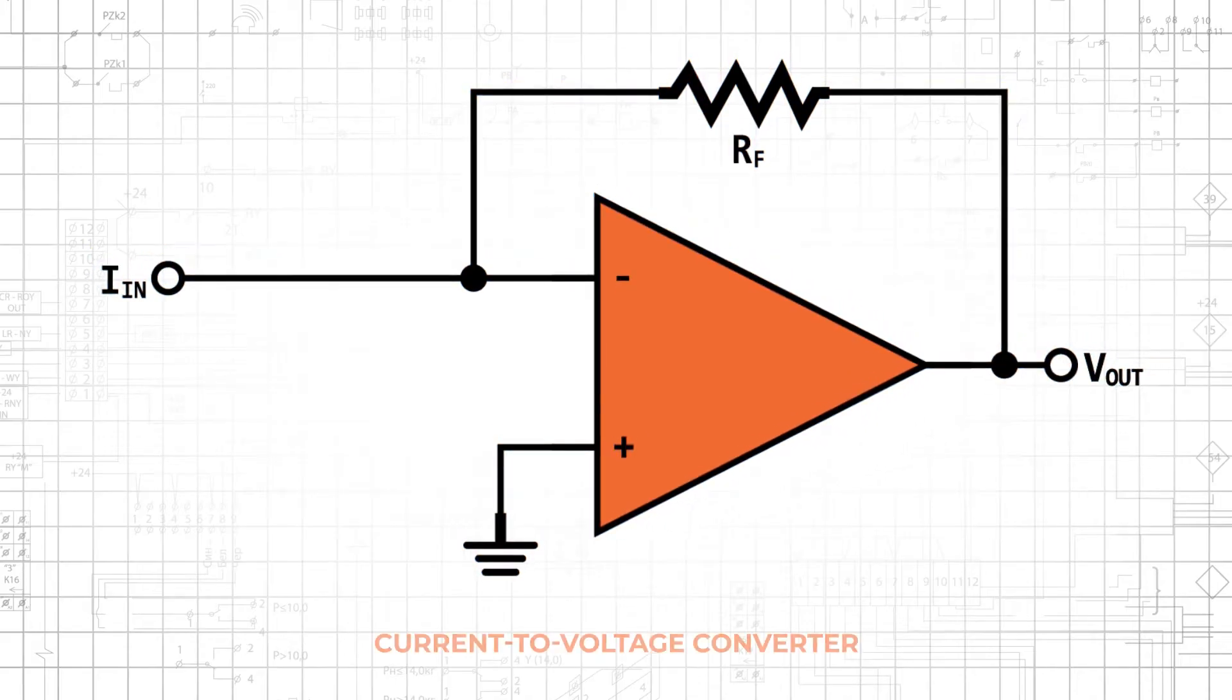Op-amps are used as a simple and effective means of converting a current signal into a voltage signal. The most basic implementation, shown here, requires only one resistor in addition to the op-amp. The input current is applied to the inverting input terminal, and the op-amp generates an output voltage whose magnitude is equal to the current multiplied by the feedback resistance.